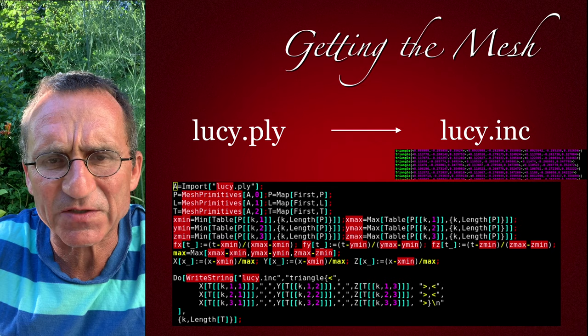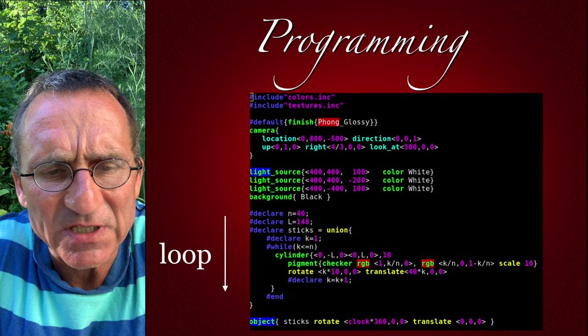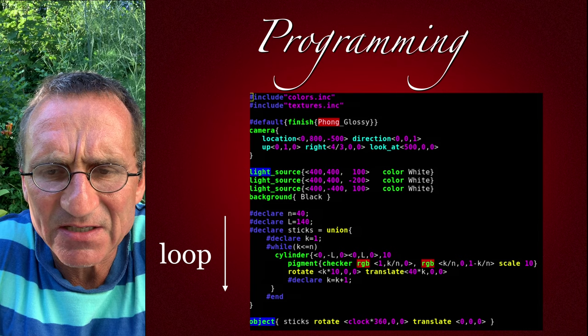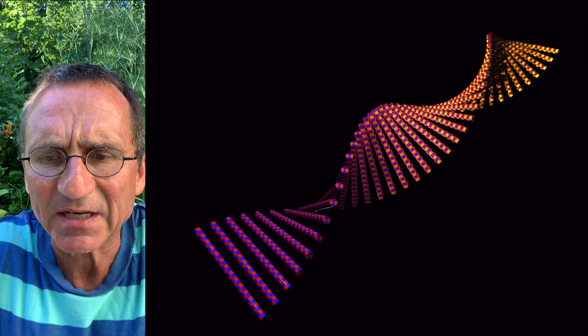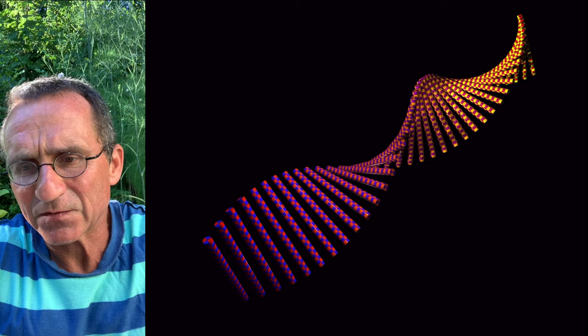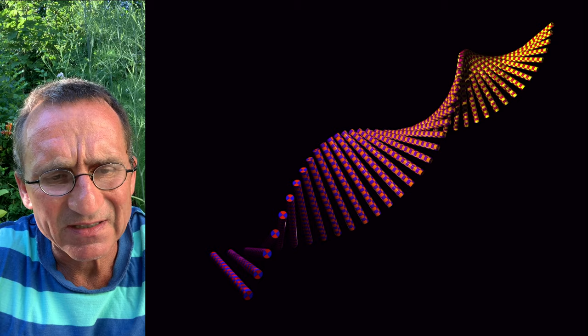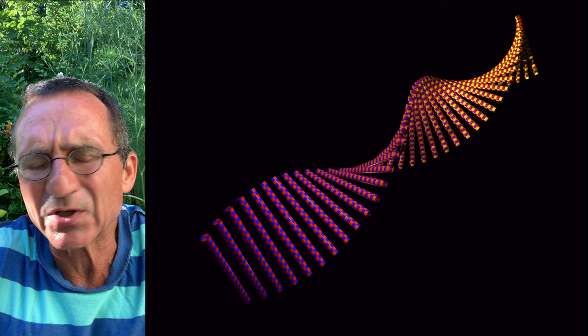Here is another example where we use a loop to stack some sticks together. Each stick is a cylinder painted with a checkerboard texture, and each step the stick is rotated and translated. There's also a clock parameter so we see this animated. It's very simple, but it looks nice — a few lines of code have produced this. The recording was done in 4K, but it was reduced in size a little bit for the slides. In principle you could render it in any resolution.